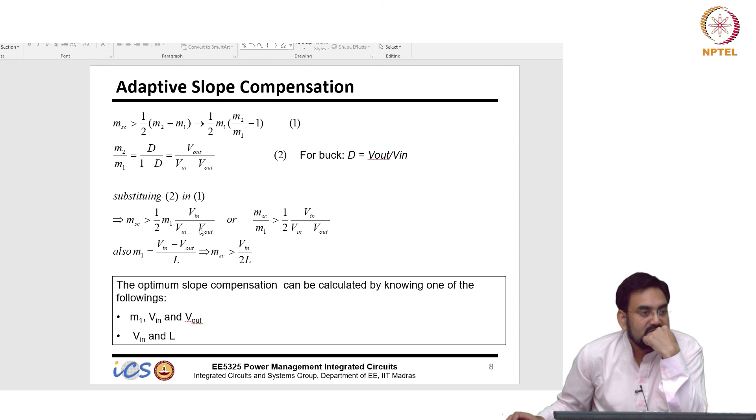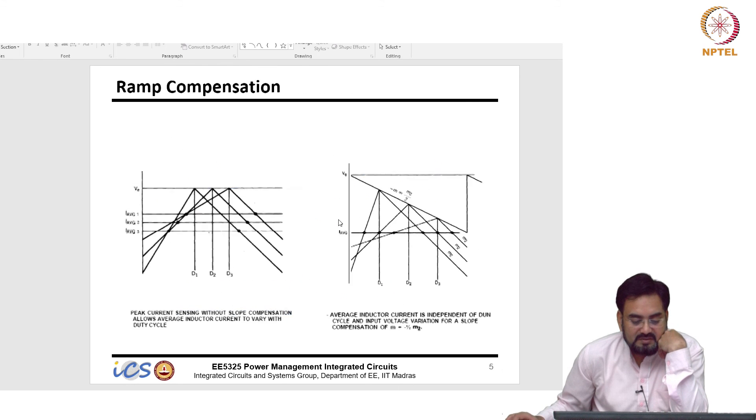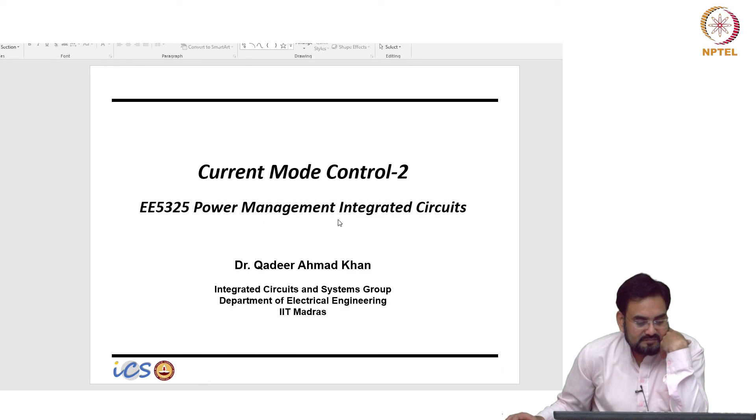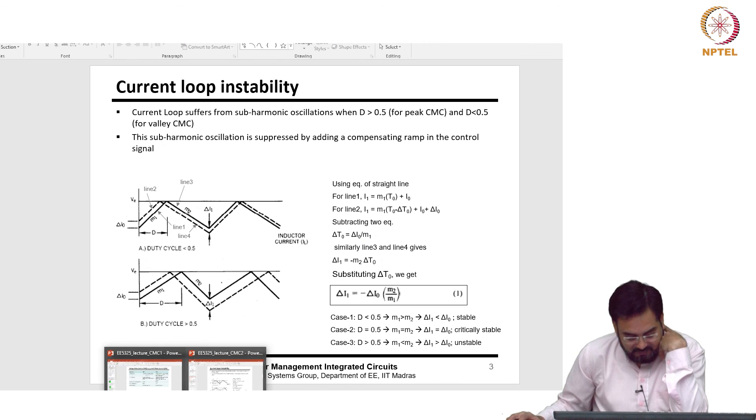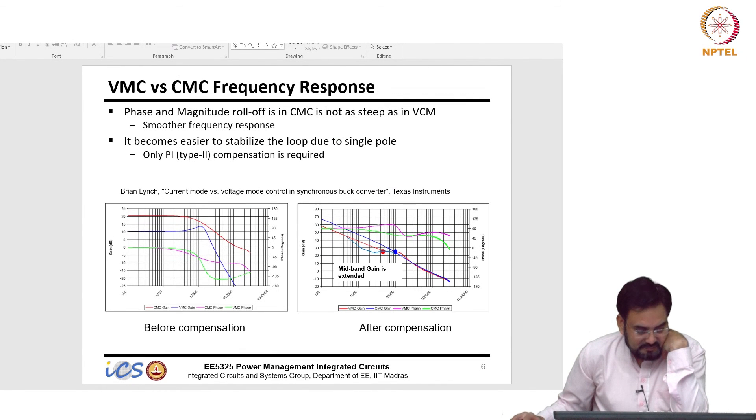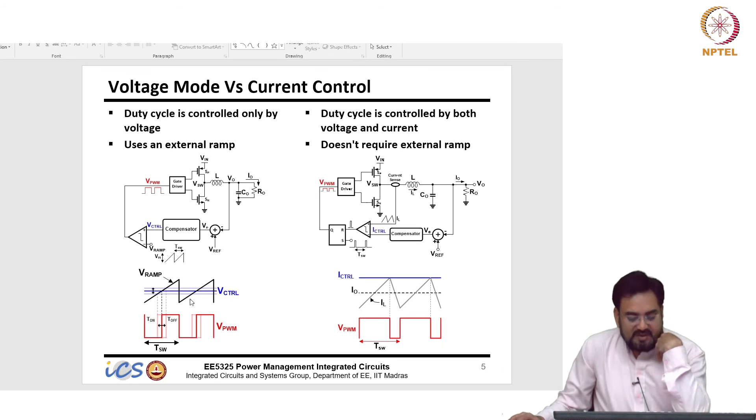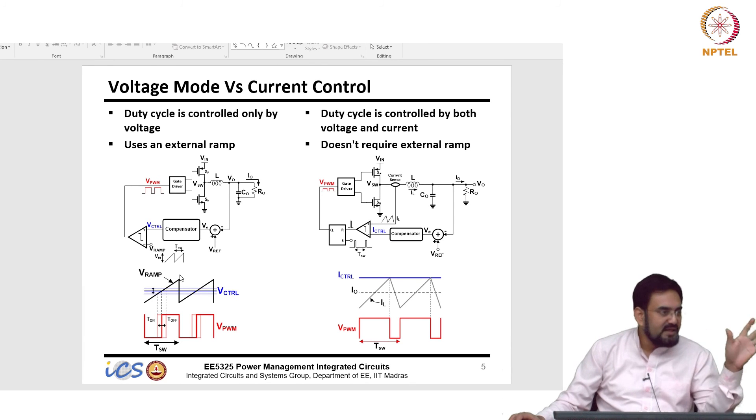Current to voltage, current mode. So, this is your voltage mode, what do you have? You have an external ramp which does not contain any current information.